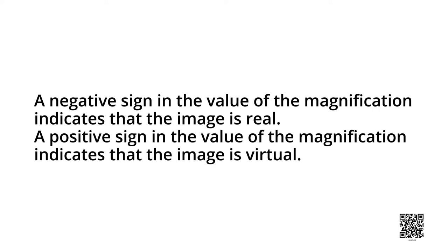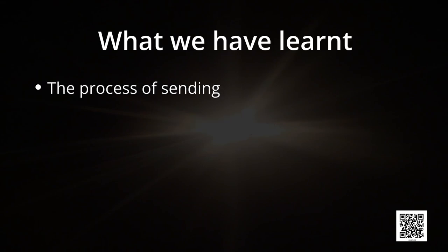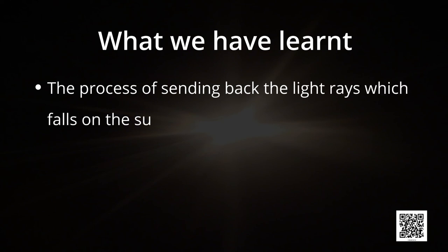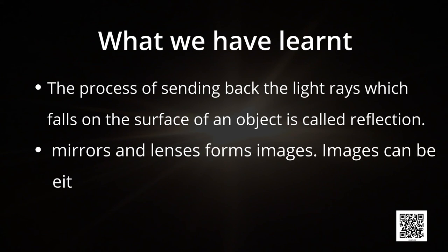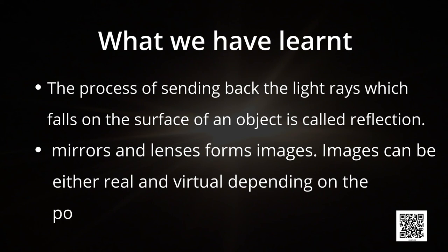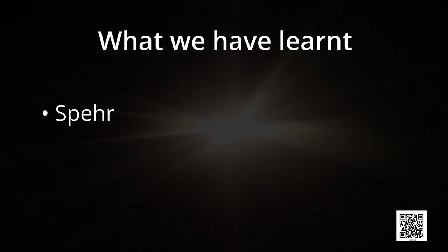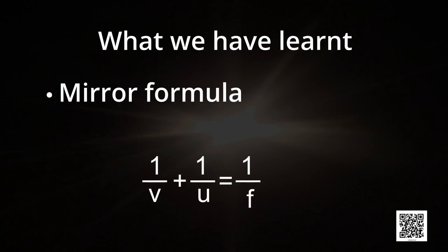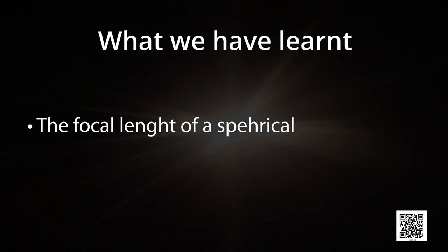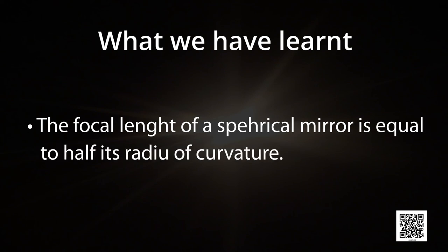The process of sending back light rays which fall on the surface of an object is called reflection. Mirrors and lenses form images — images can be either real or virtual depending on the position of the object. Spherical mirrors are of two types: convex mirror and concave mirror. The mirror formula 1/v + 1/u = 1/f gives the relationship between object distance u, image distance v, and focal length f. The focal length of a spherical mirror is equal to half its radius of curvature.